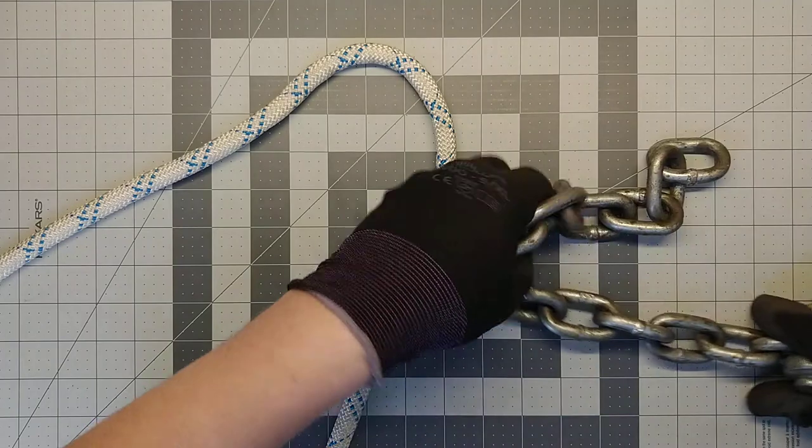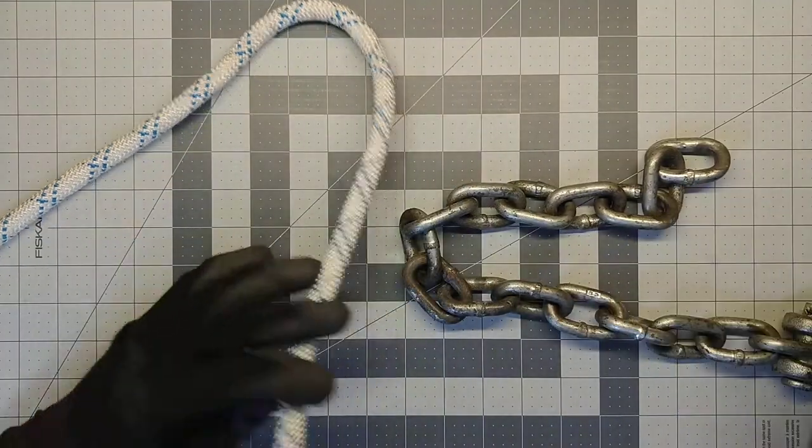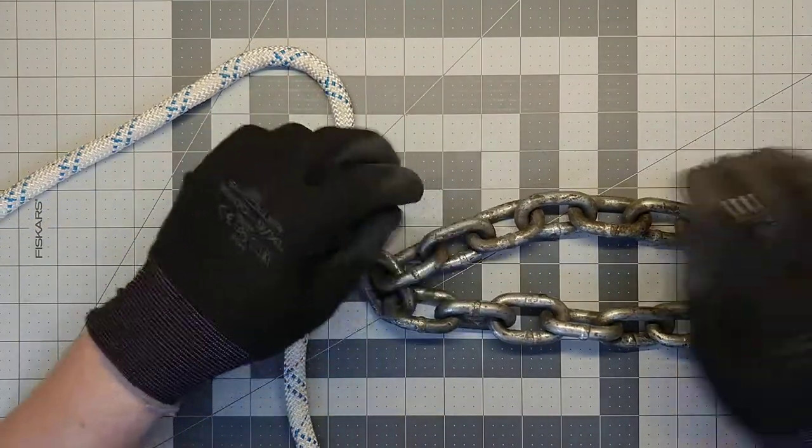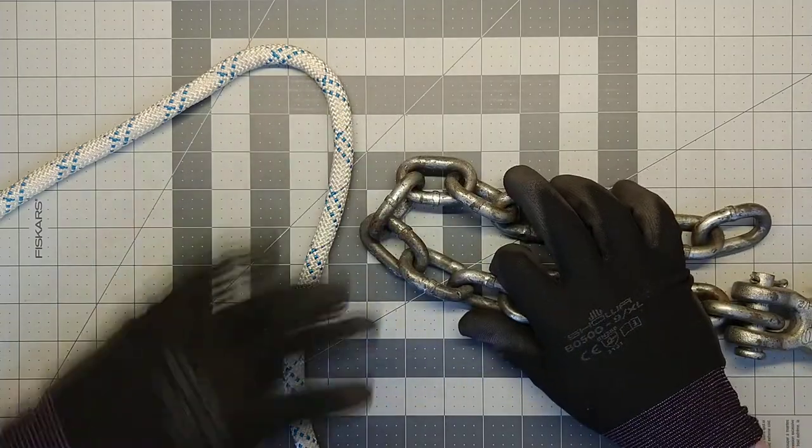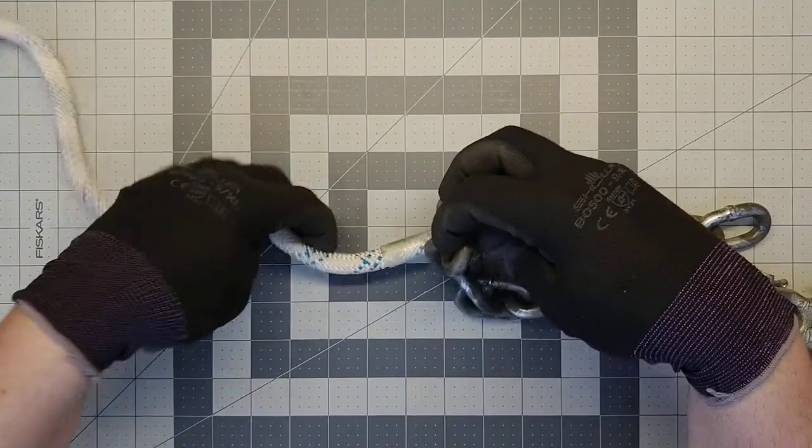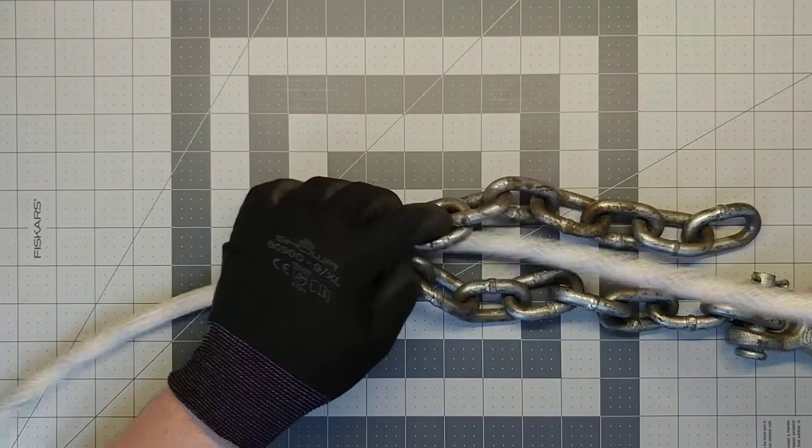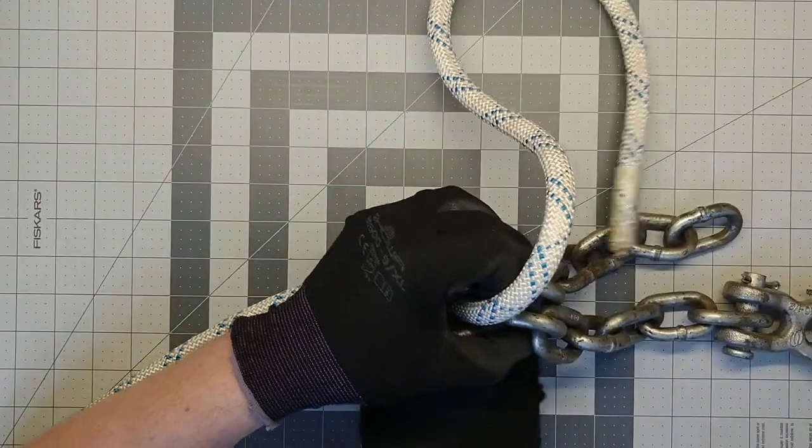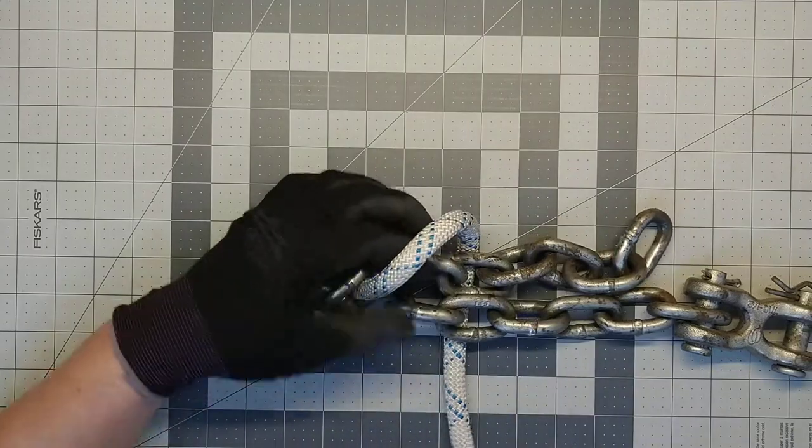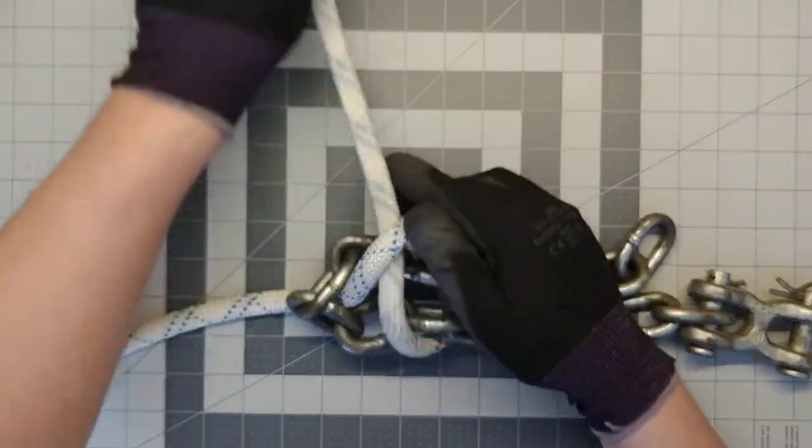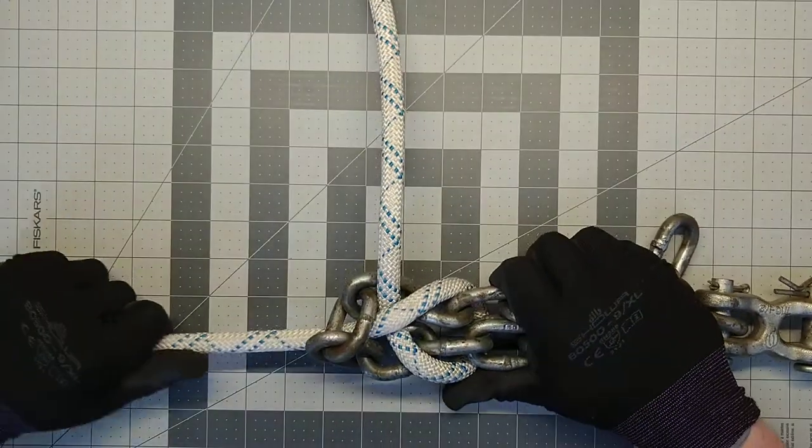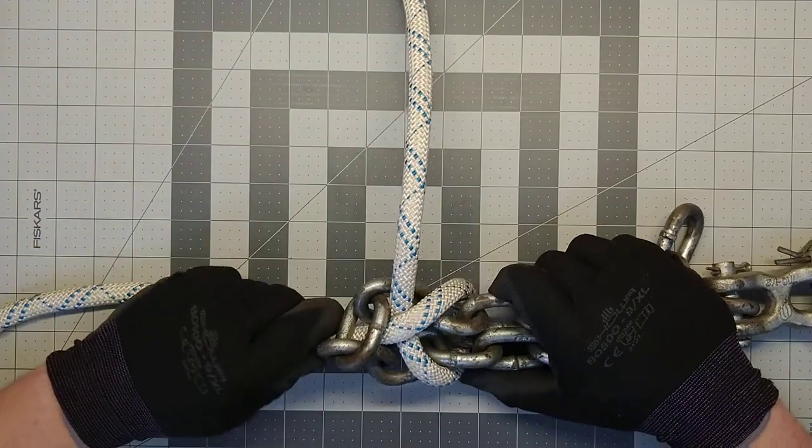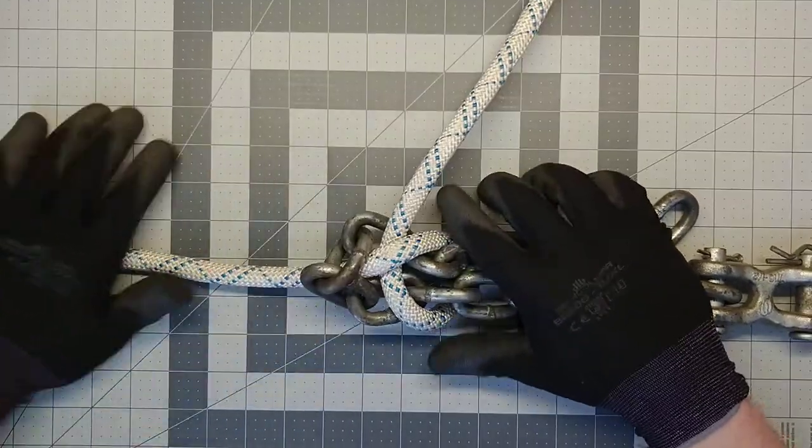Whenever you're joining a rope to a chain, we want to make our bight with the chain just to make things easier. We come up through the bight, come around underneath, and then back under the main line. There we go, there's a becket bend.